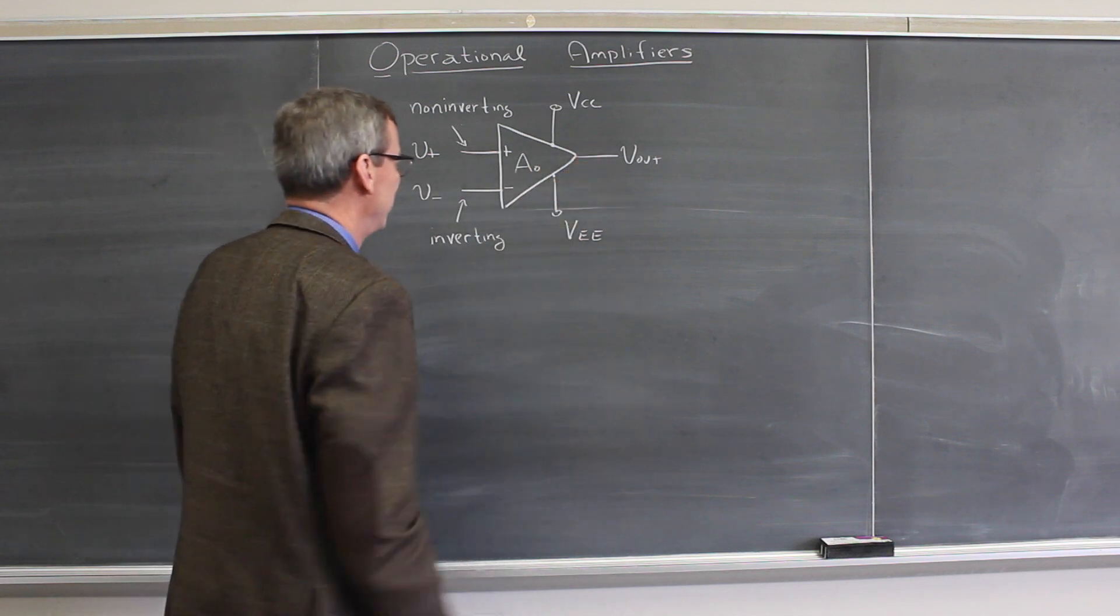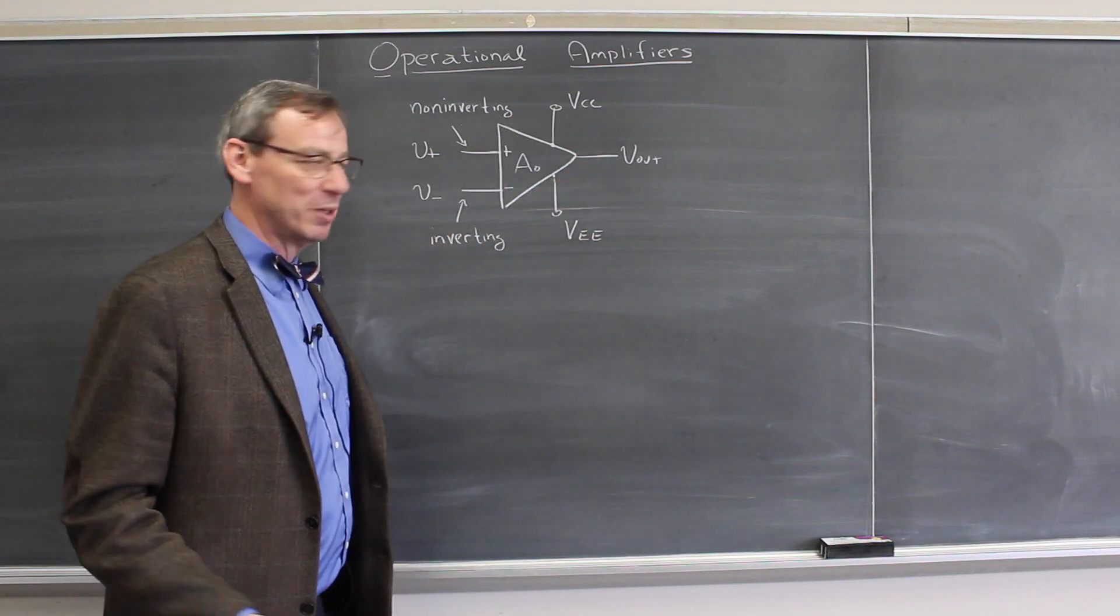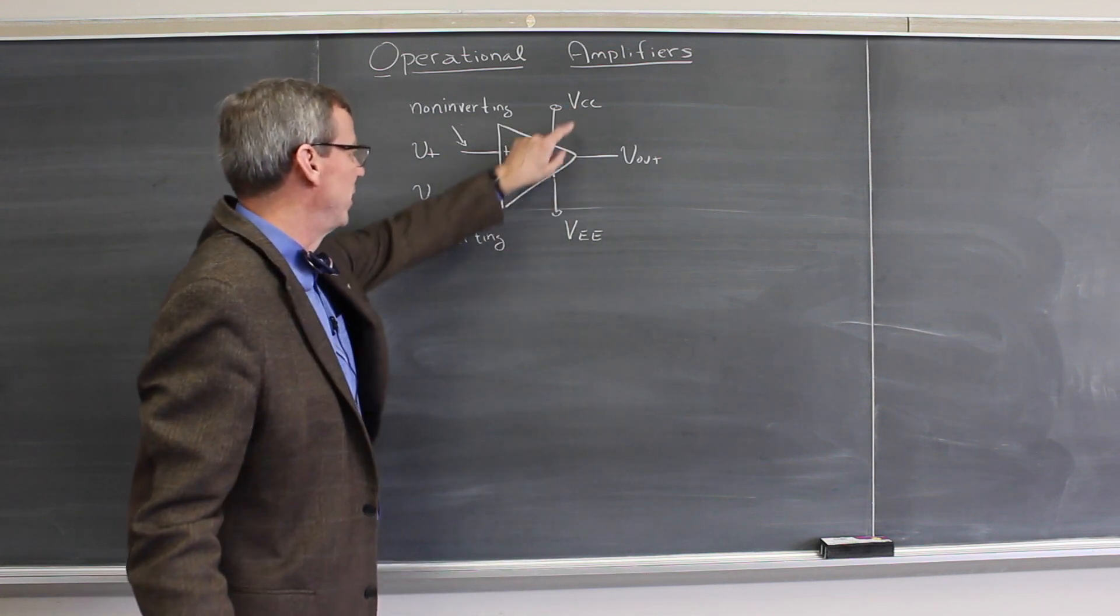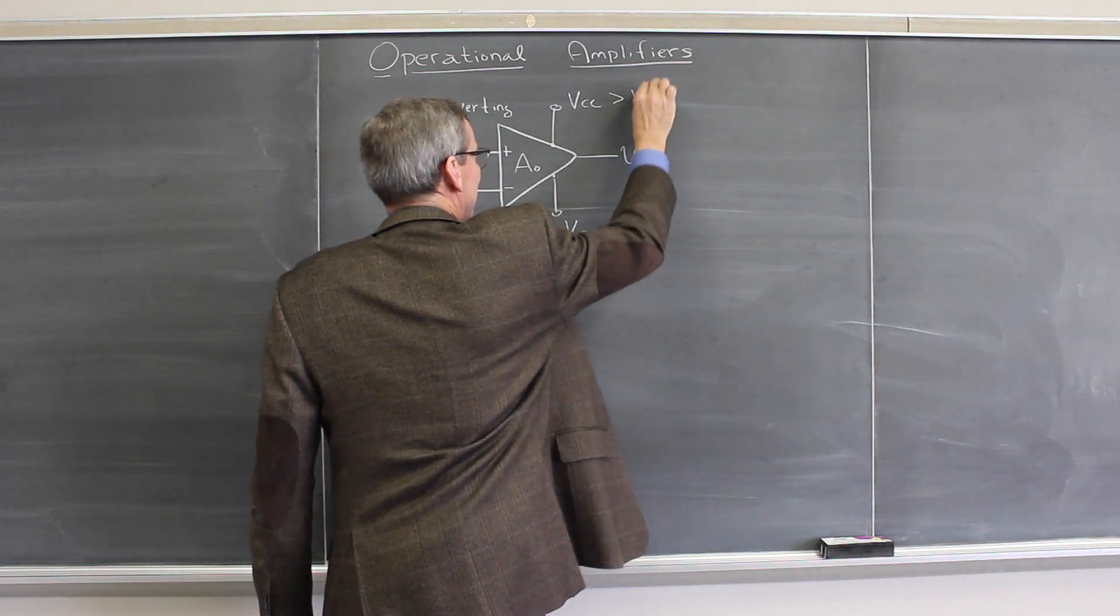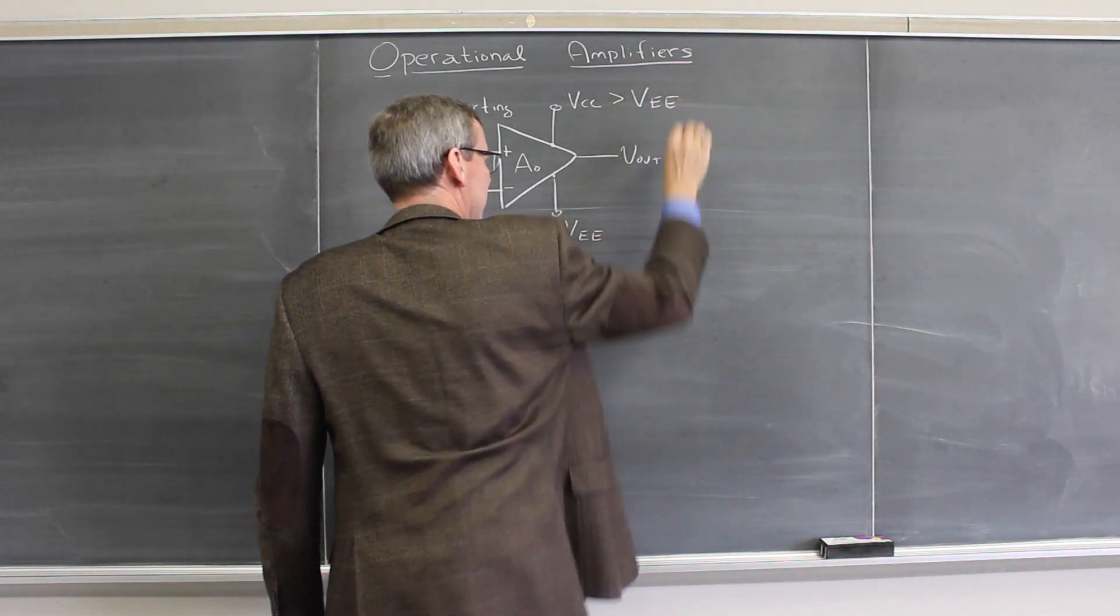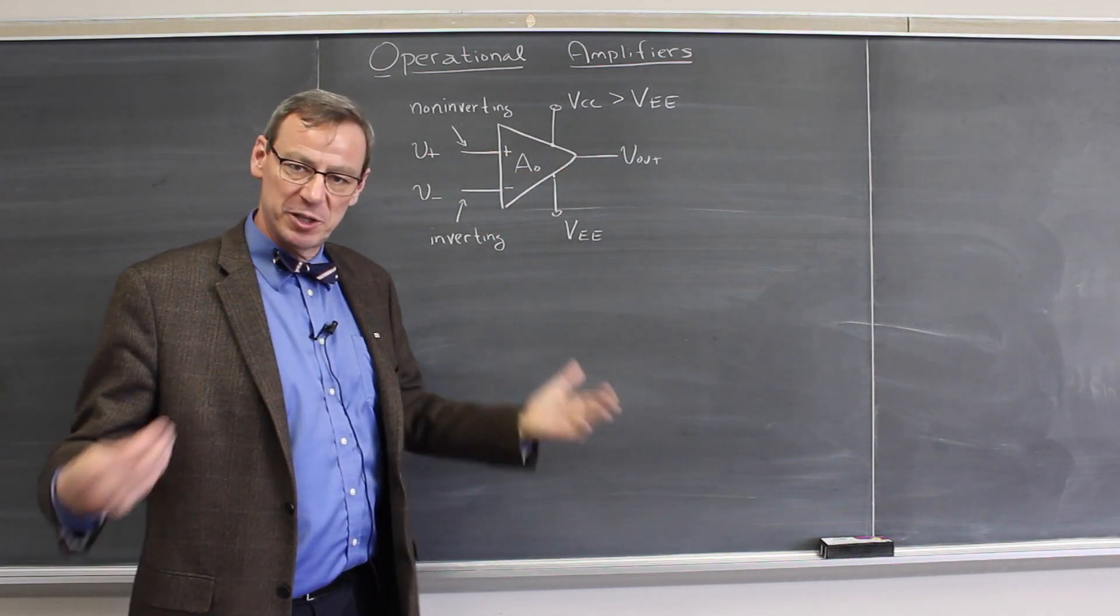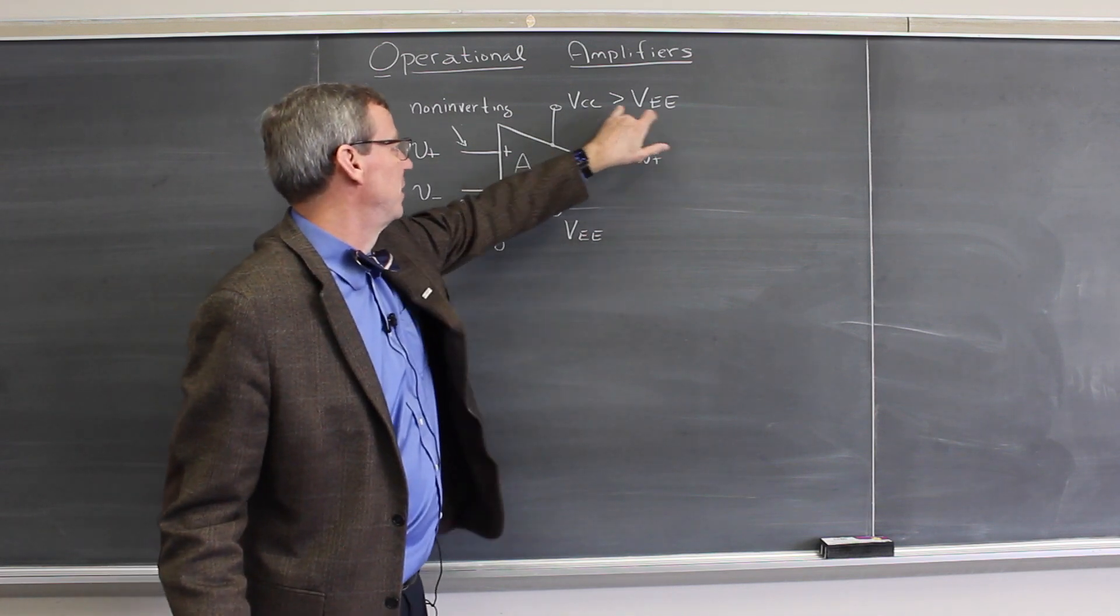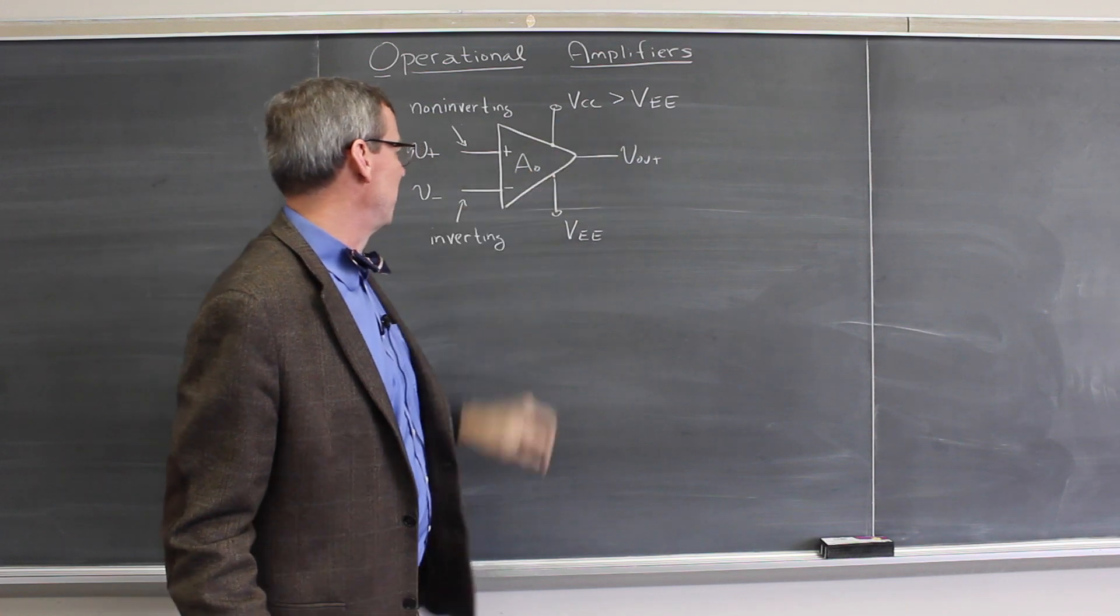It has two inputs and an output. In order for it to amplify, you have to supply power. There are two DC voltage levels connected to this as well—we call them VCC and VEE, and VCC has to be bigger than VEE for this to work. They're very often set to be plus and minus 12 volts, something symmetric around zero, but they don't have to be. They just have to have the constraint that the emitter is smaller than the collector.